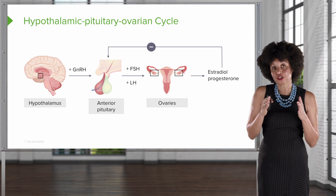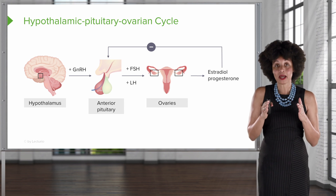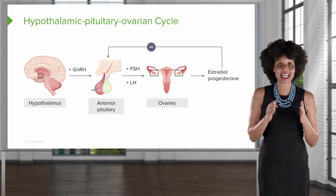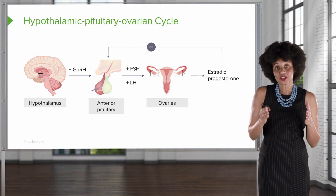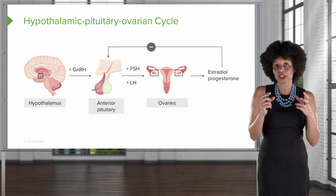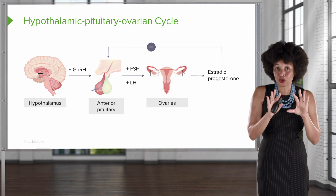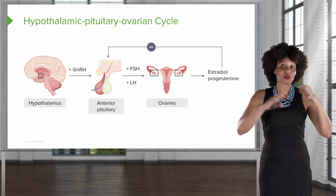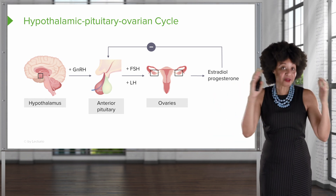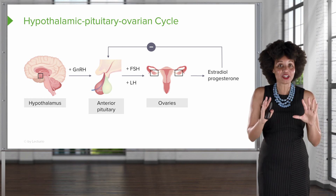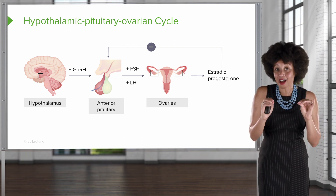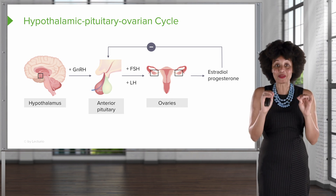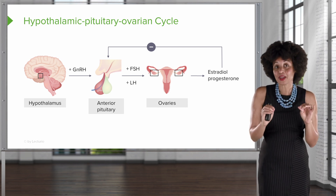Estrogen and progesterone actually form positive and negative feedback loops with both the anterior pituitary and the hypothalamus. As the follicle grows and the egg inside grows, we don't want to keep growing the egg indefinitely — that would be a problem. So we want to send a message when the egg is the perfect size to stop production. That's what the feedback loop is about.